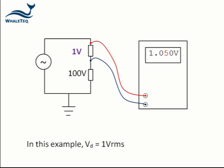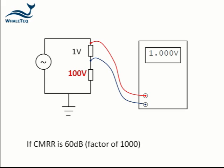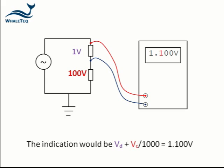In this example there is a differential voltage of 1 volt and a common mode voltage of 100 volts. If the meter has a specification of 60 dB, it would result in a display of 1.1 volts instead of 1 volt RMS.